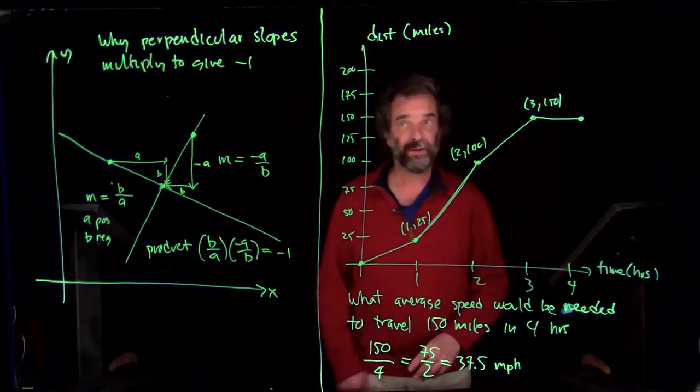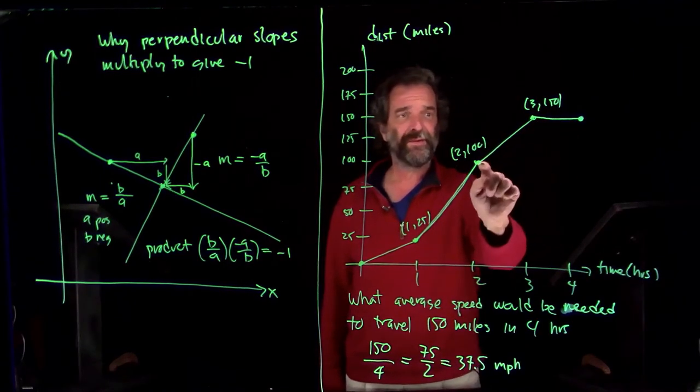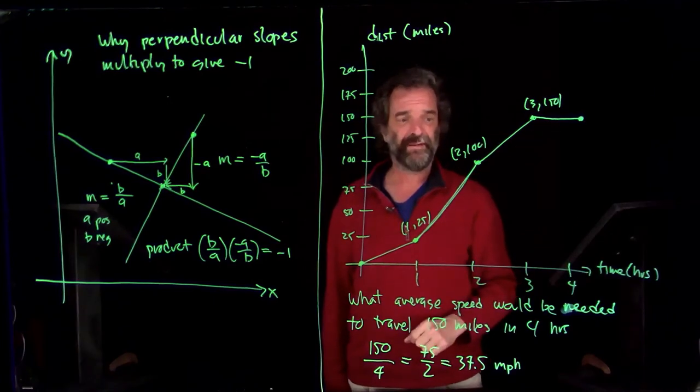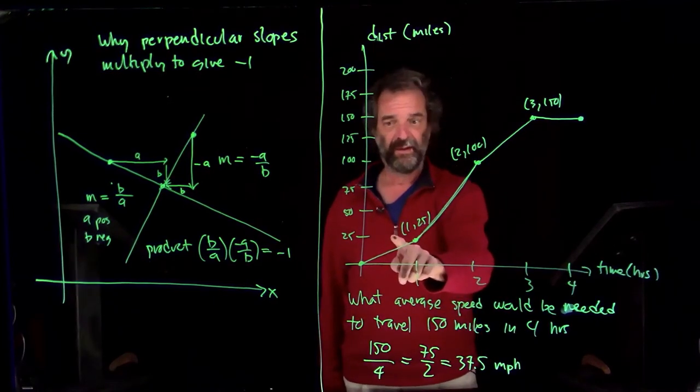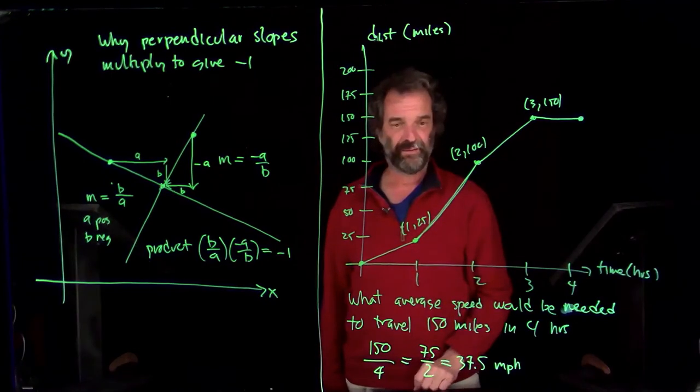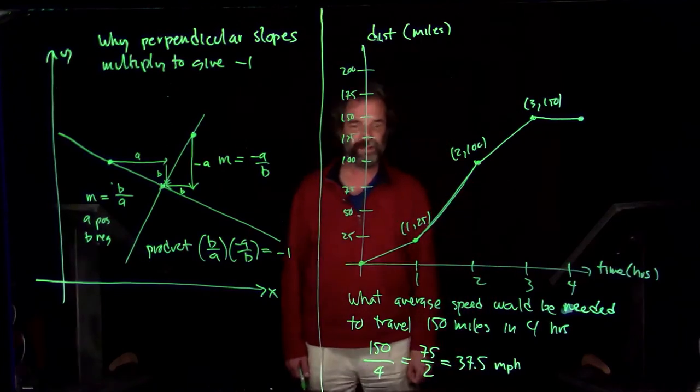How could that possibly be? Well, we went 50 miles an hour here, and then we sat still. So over those two hours we only made 50 miles, that's 25 miles per hour. Here's another 25 miles per hour. And in the middle we only did 75. So that didn't quite offset it.